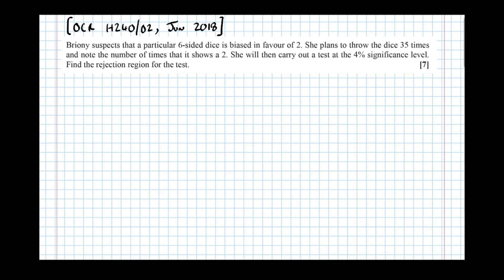So now going through the process of carrying out the hypothesis test, we need to state in words what the parameter we're testing actually is. So in a binomial hypothesis test, we're testing P. So P equals, in this case, the probability a two is thrown.